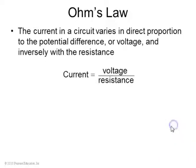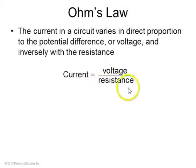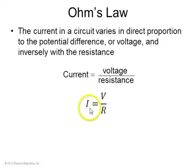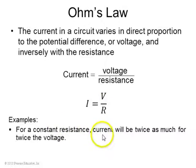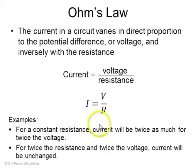Ohm's law states that the current through an object varies directly proportional to the voltage across it and inversely proportional to the resistance of the object. In simple form, it's I equals V over R. For example, if you have an object with some constant resistance and you double the voltage, you'll double the current. If you double both the resistance and the voltage, the current will remain the same.